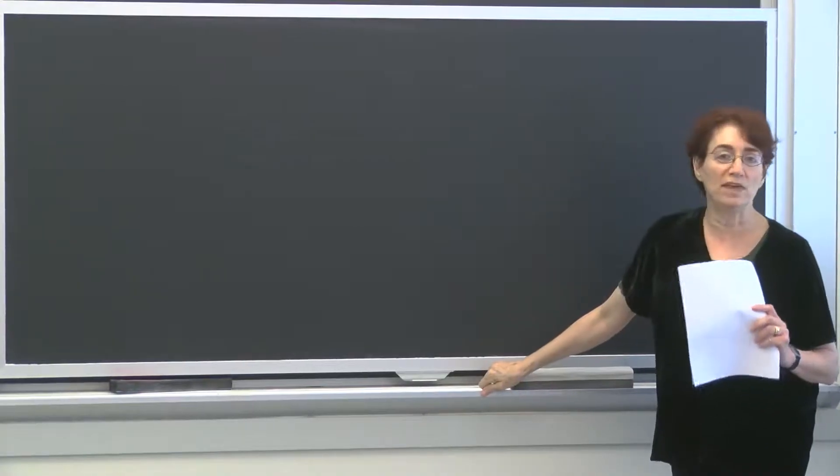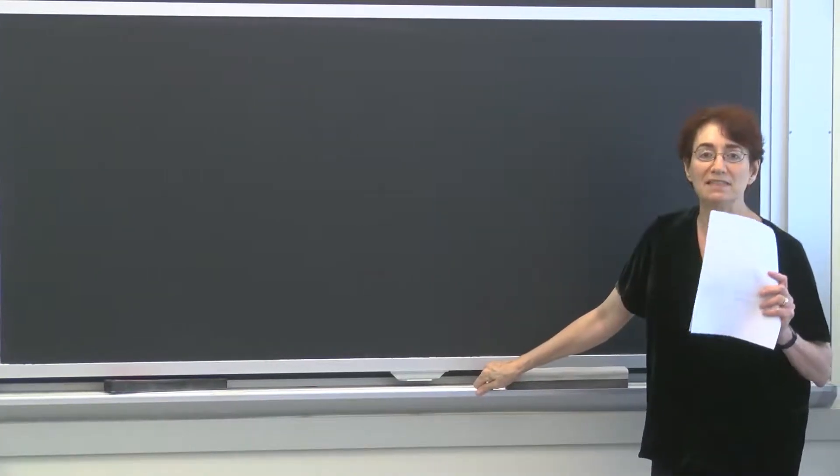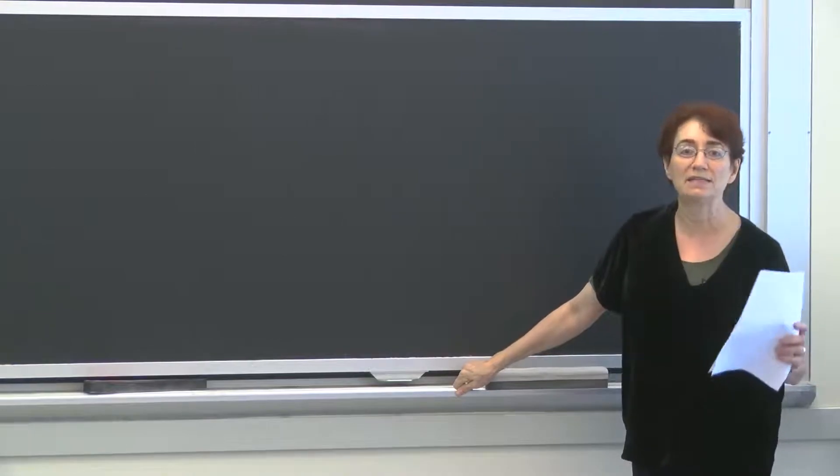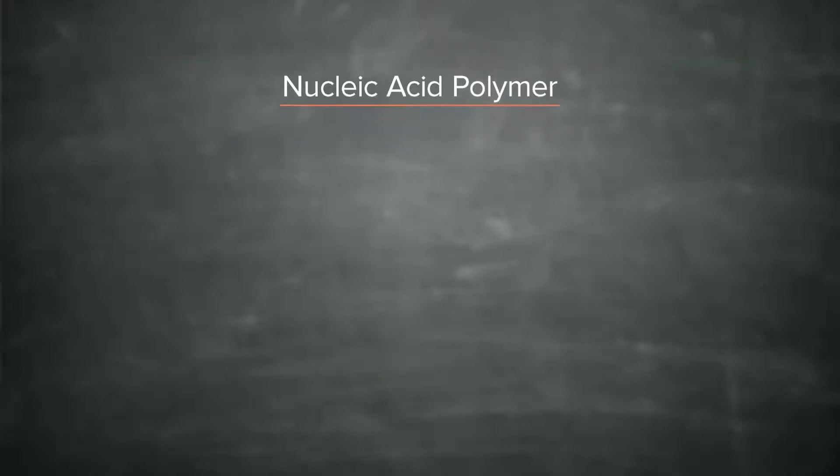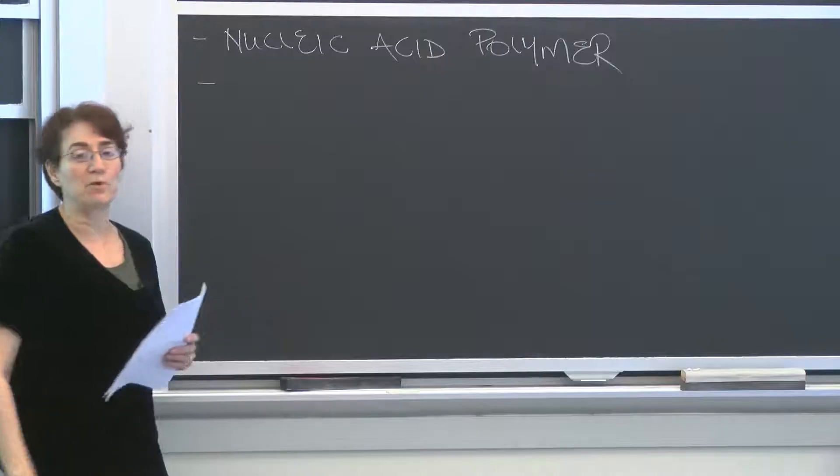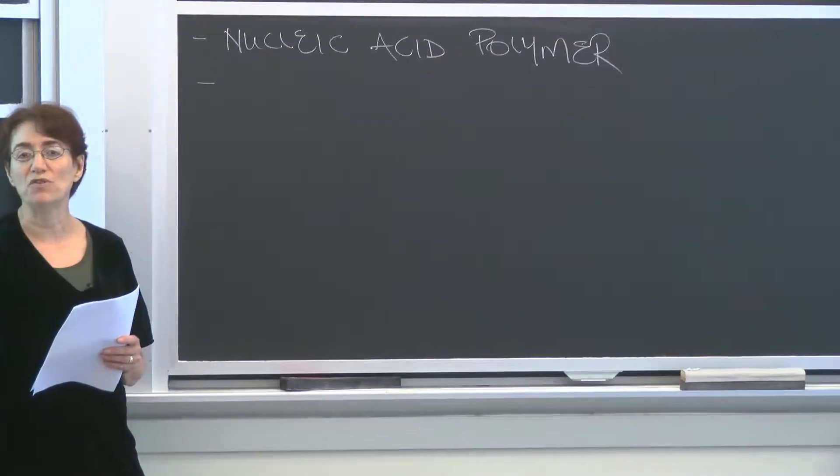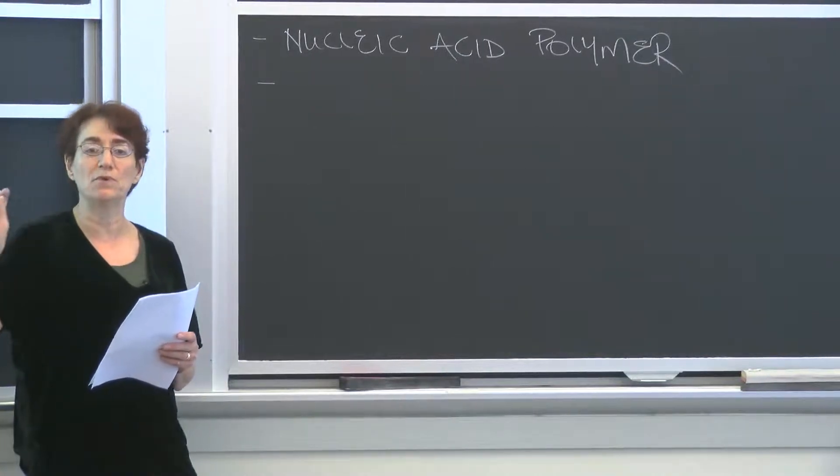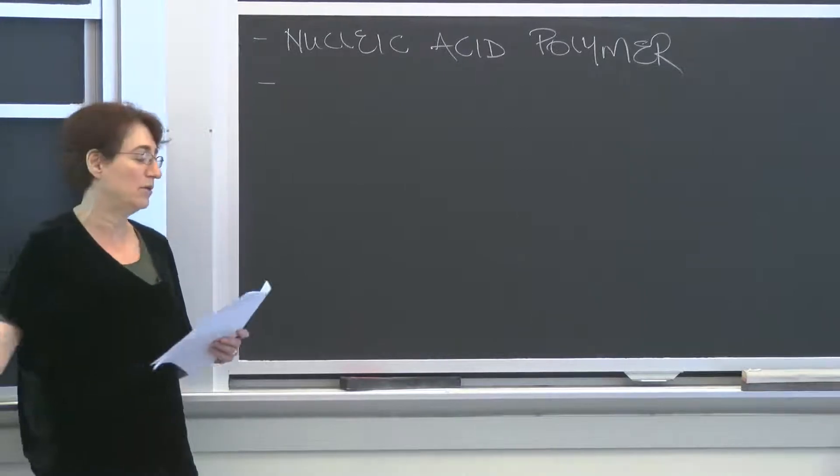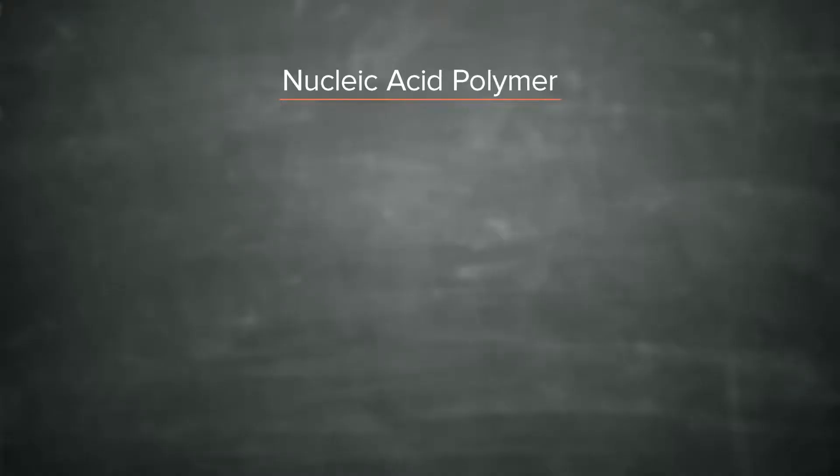In order to do that, we need to come back and consider the nucleic acid polymer. The nucleic acid polymer has two different ends. It has a so-called 5' and a so-called 3' end. And you can see that if I draw you a very rough schematic of how a nucleic acid polymer is put together.